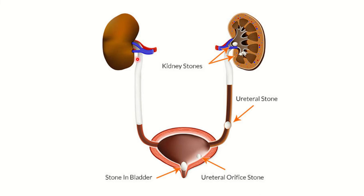An important relation at the hilum: the pelvis or ureter lies most posteriorly, and most anteriorly is the vein. So the order is vein, artery, pelvis or ureter — VAP. That means V for vein, A for artery, P for pelvis or ureter.